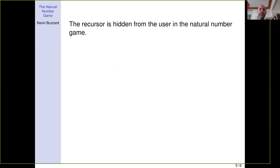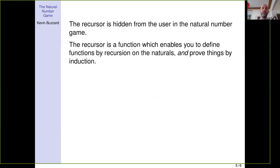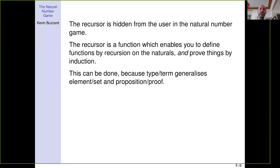The recursor is slightly scary so I hide it from the user. I just say 'let's define addition by the following axioms,' but what's actually happening is I'm using the recursor. I was always told: you prove things by induction and define things by recursion. But in Lean, induction and recursion are the same thing — induction is defining functions from the natural numbers to proofs, and recursion is defining functions from the natural numbers to sets.